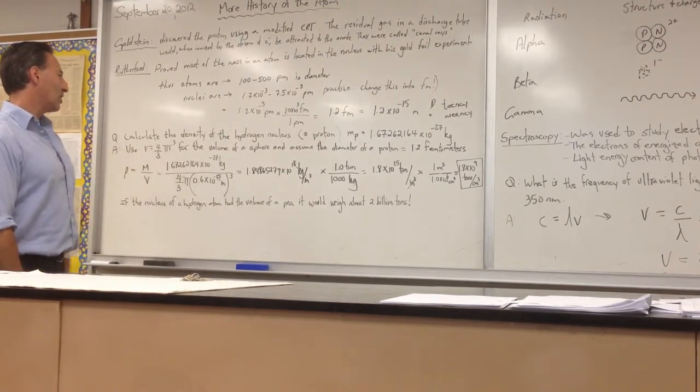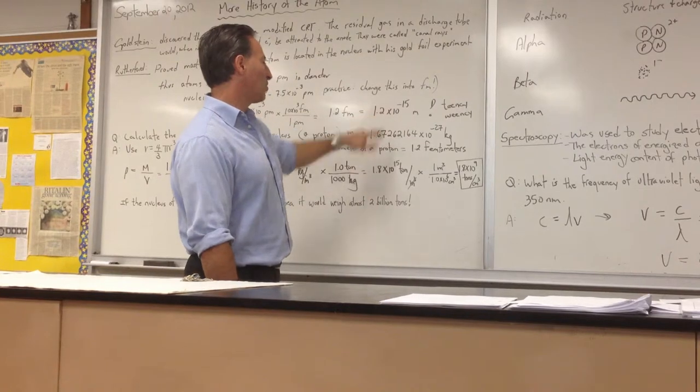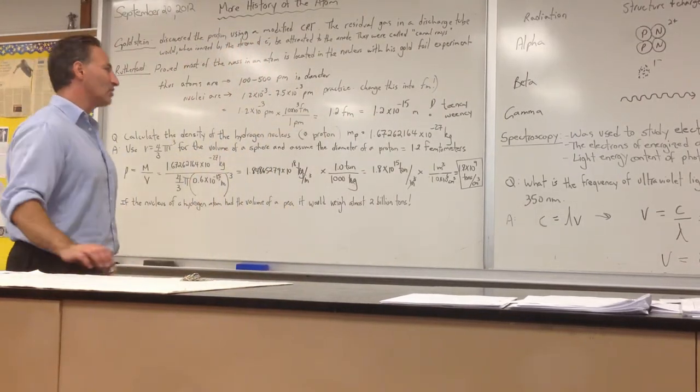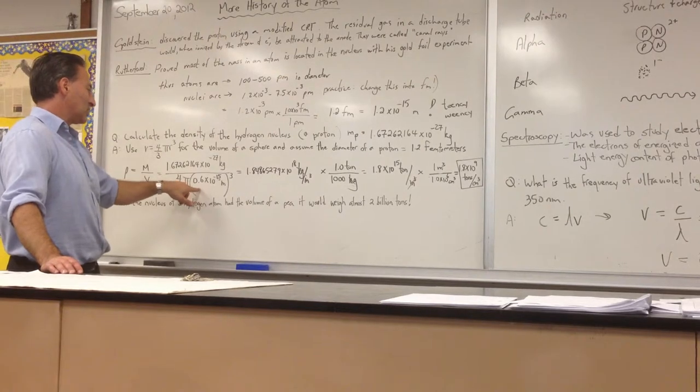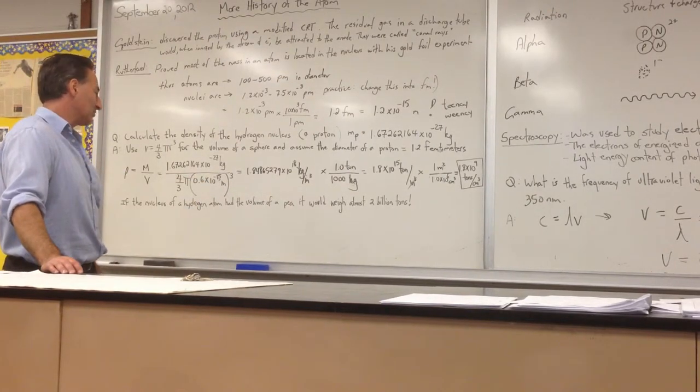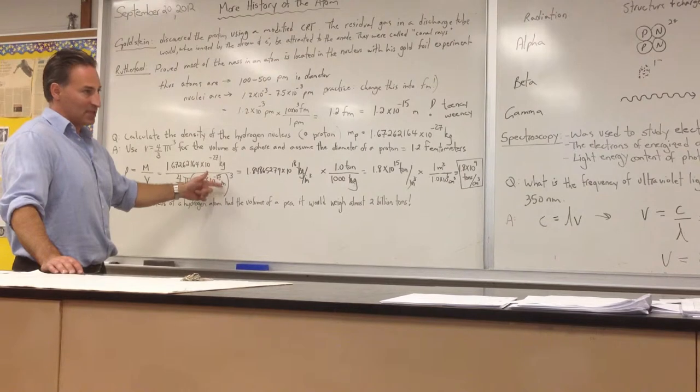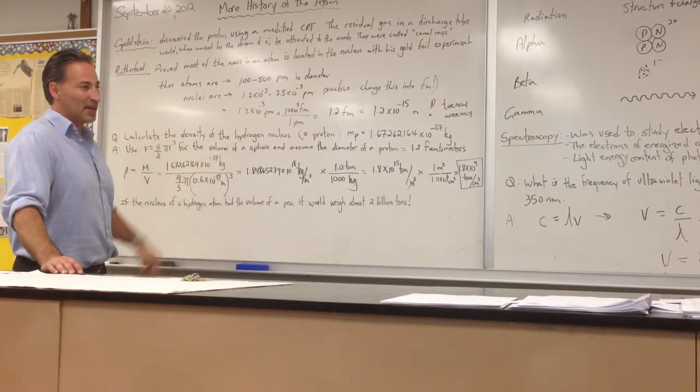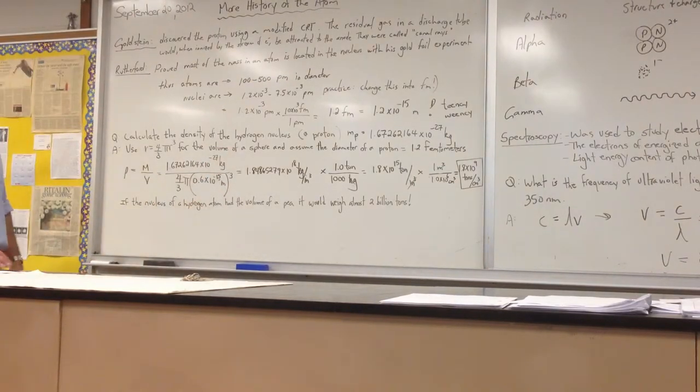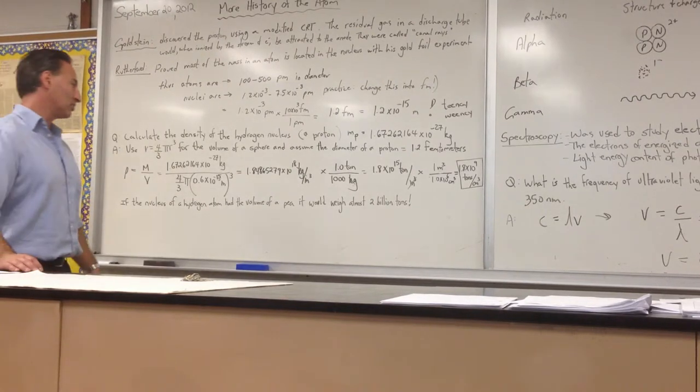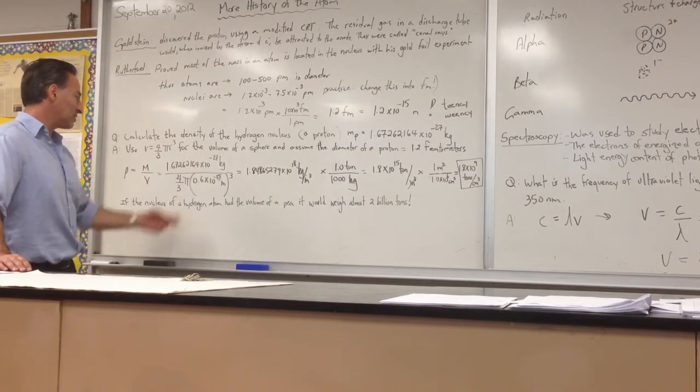So we're going to use volume equals 4 over 3 pi r cubed for the volume of the sphere. We're going to assume that the diameter of a proton is 1.2 times 10 to the minus 15 meters, or 1.2 femtometers. We're going to take half of that, 1.2, so 0.6. That's why I wrote 0.6 times 10 to the minus 15 meters. Remember, the units of density should be in kilograms per meters cubed, or grams per centimeter cubed, or kilograms per decimeter cubed. That would give you the same number. I chose kilograms per meter cubed, and then I'm going to switch it to something else that is more appropriate because of the huge density of the proton. At any rate, here's the mass of a proton in kilograms, 1.67 times 10 to the minus 27 kilograms. Here's the volume. We're going to cube this radius.